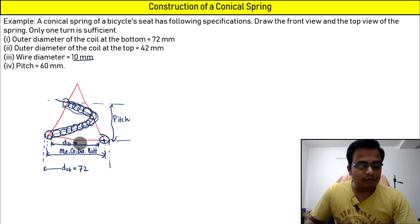So d_inner bottom is going to work out as 72 minus 10 minus 10, that is going to be equal to 52. So mean is going to be how much? Somewhere in between 72 and 52, that is going to be 62.